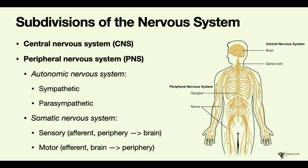The peripheral nervous system is divided into two parts: the autonomic nervous system and the somatic nervous system. The autonomic nervous system is involuntary and it is responsible for regulating our internal organs and basic functions such as heart rate, breathing rate, etc.